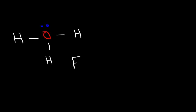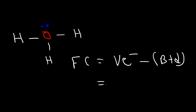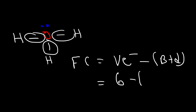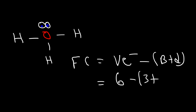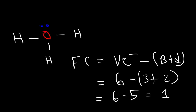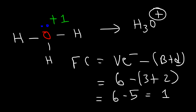Using the same formula, the formal charge is equal to the valence electrons minus the bonds and the dots. Oxygen naturally has six valence electrons. In this structure, there are three bonds and two dots. So three plus two is five, and six minus five is one. So the formal charge on oxygen is positive one. Now you know that this positive charge on the hydronium ion is due to the formal charge on oxygen.